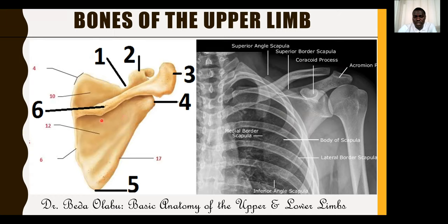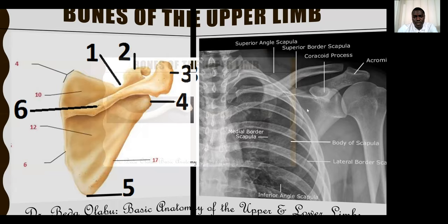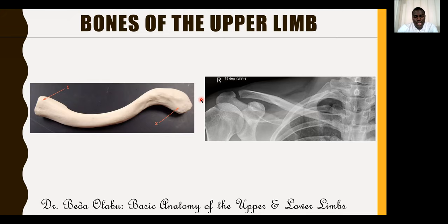This is a right scapula and this is a left scapula. The other bone of the pectoral girdle is the clavicle. It has a flat acromial end and a rounded sternal end. This is how it looks radiologically.